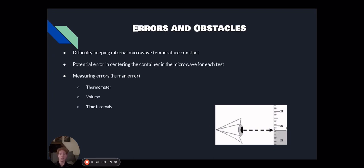Some human error that could possibly have occurred was with the thermometer, volume, and time intervals. Reading the thermometer and volume values, as well as the time intervals for removing the substance from the microwave and recording the temperature, could have varied from test to test.